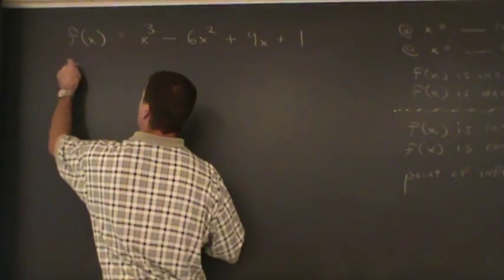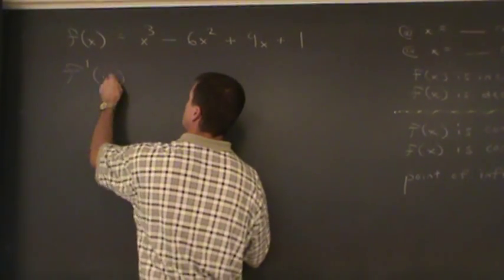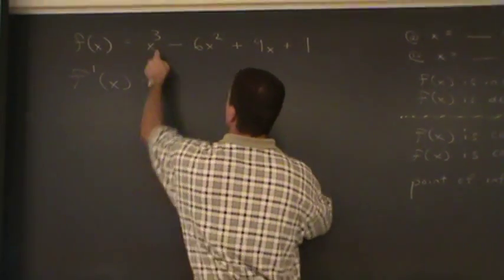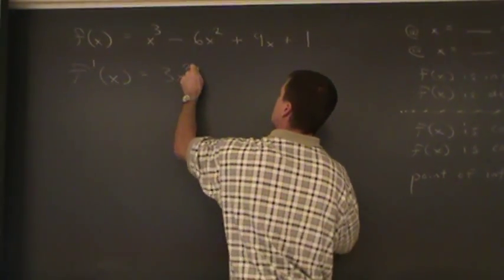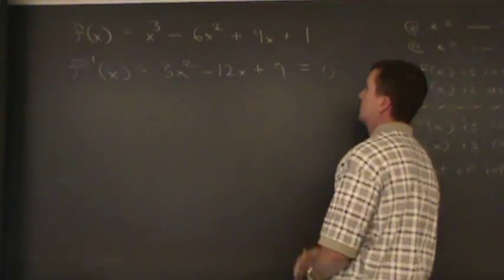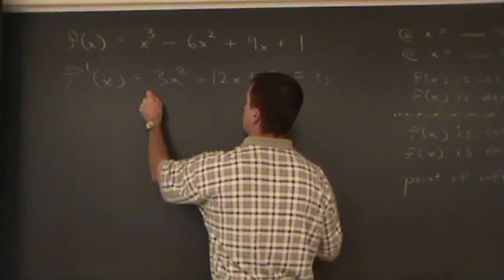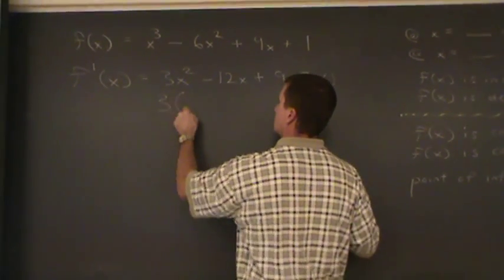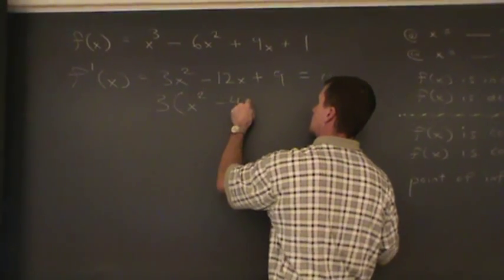So we start with max and mins. We find the critical values. We set the first derivative equal to zero. I get 3x squared minus 12x plus 9. And I can factor this, factor out a 3 out of this expression here. I'm left with x squared minus 4x plus 3.